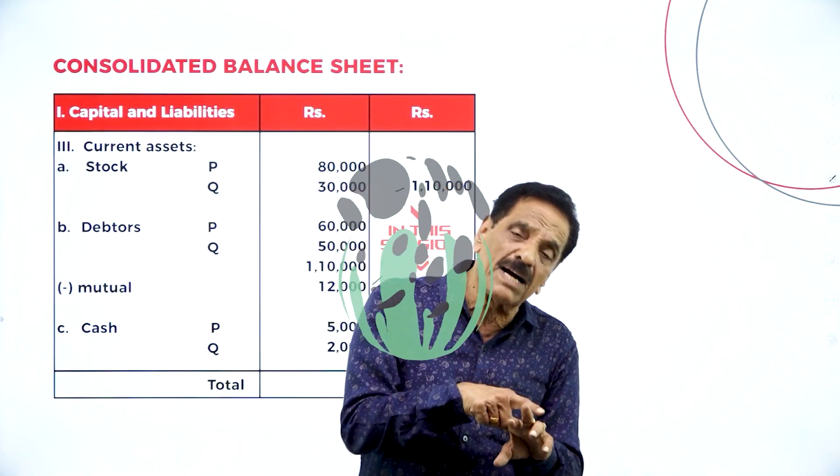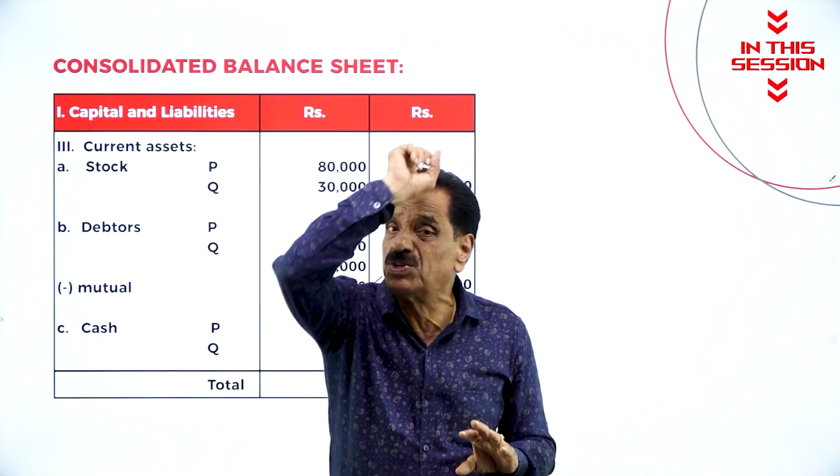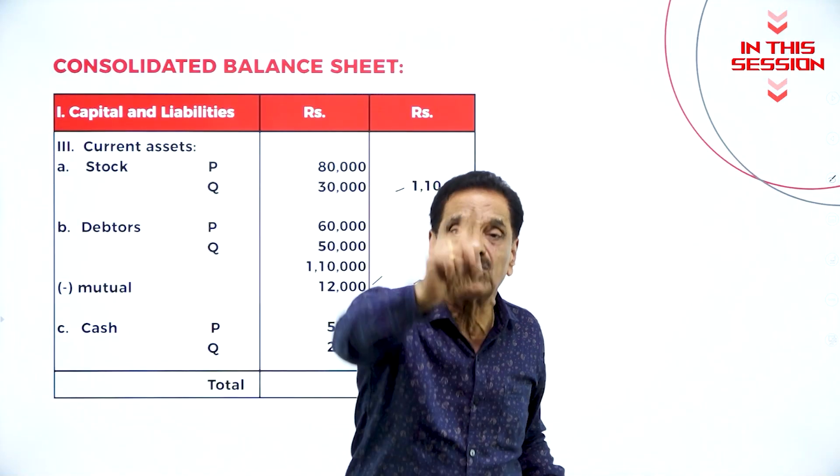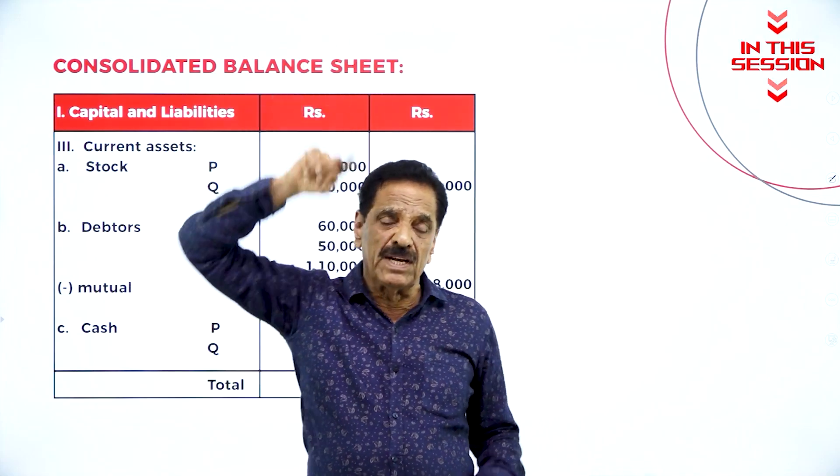Either the goodwill or the capital reserve, whichever is more, should come on the balance sheet.